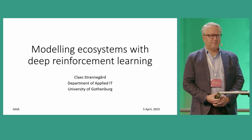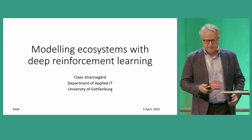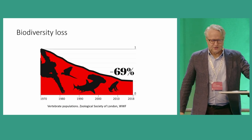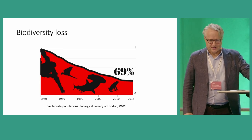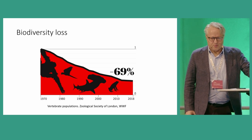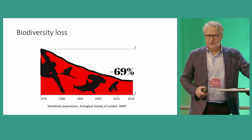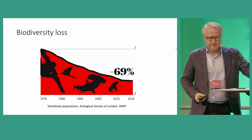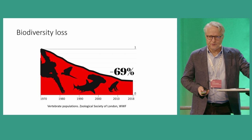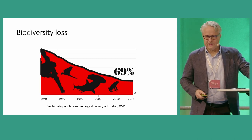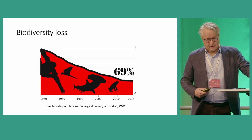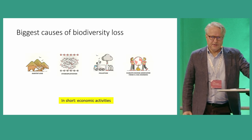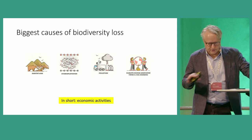I'm going to talk about AI applied to ecosystem modeling, and this is joint work with a lot of people. As we all know, we are facing a lot of challenges when it comes to sustainability. If we take a look at the biodiversity curve, it has been going down pretty consistently in the last few years, and that is not good for us.